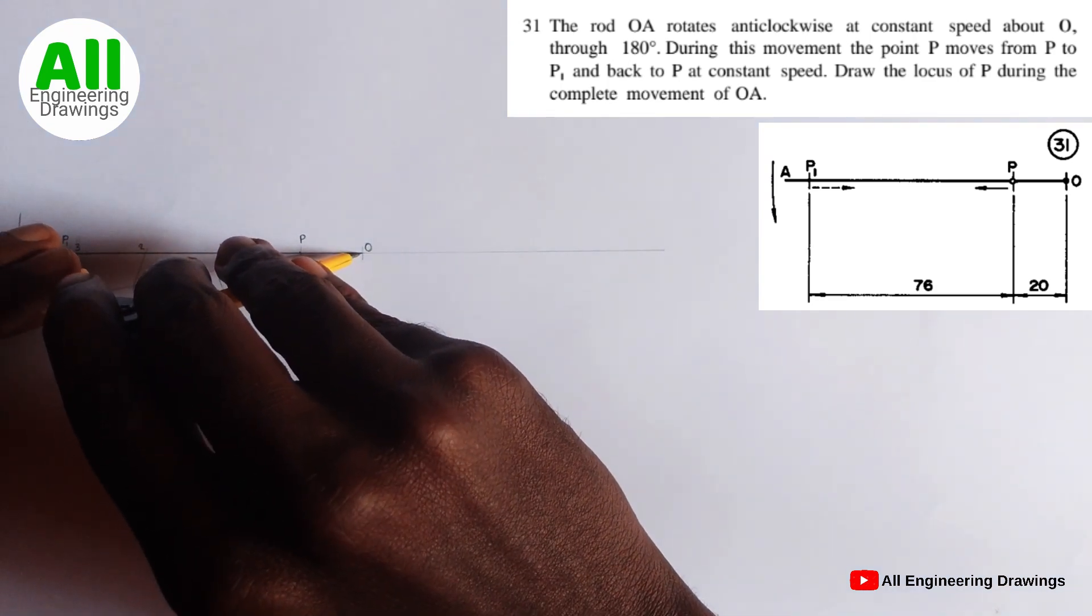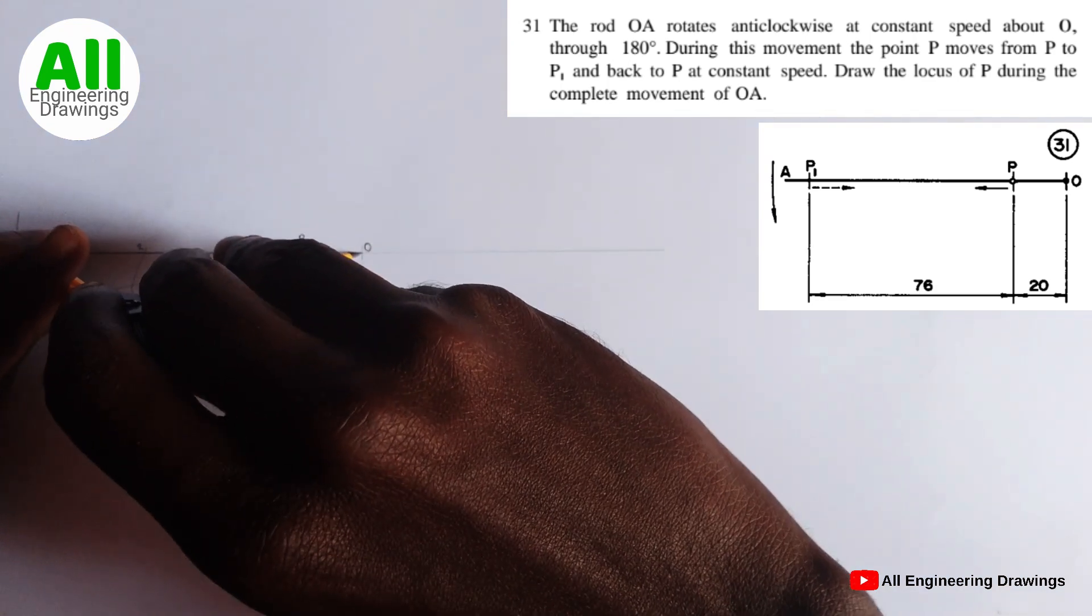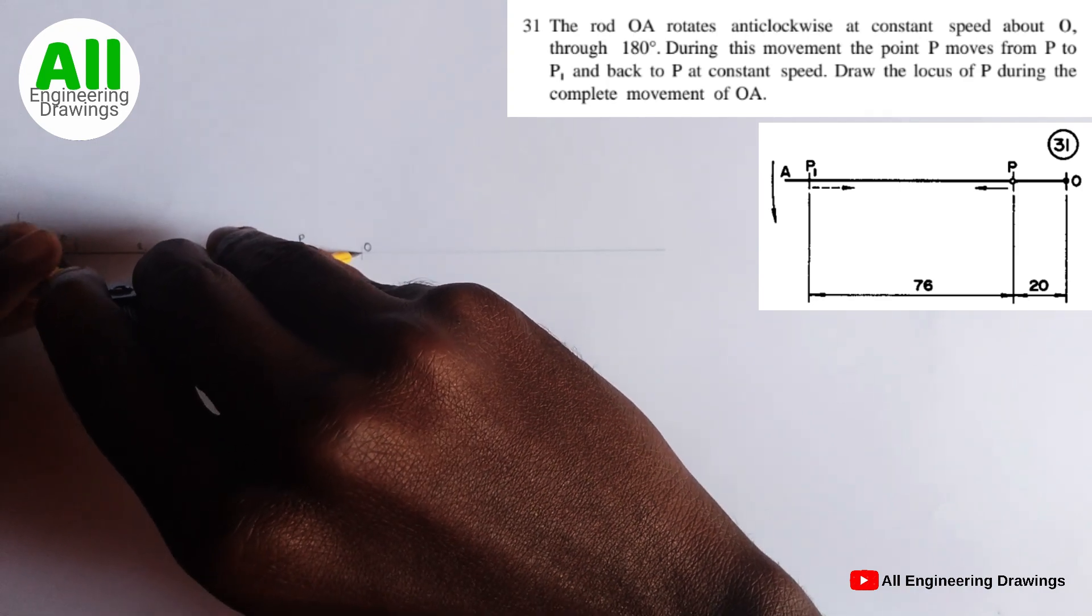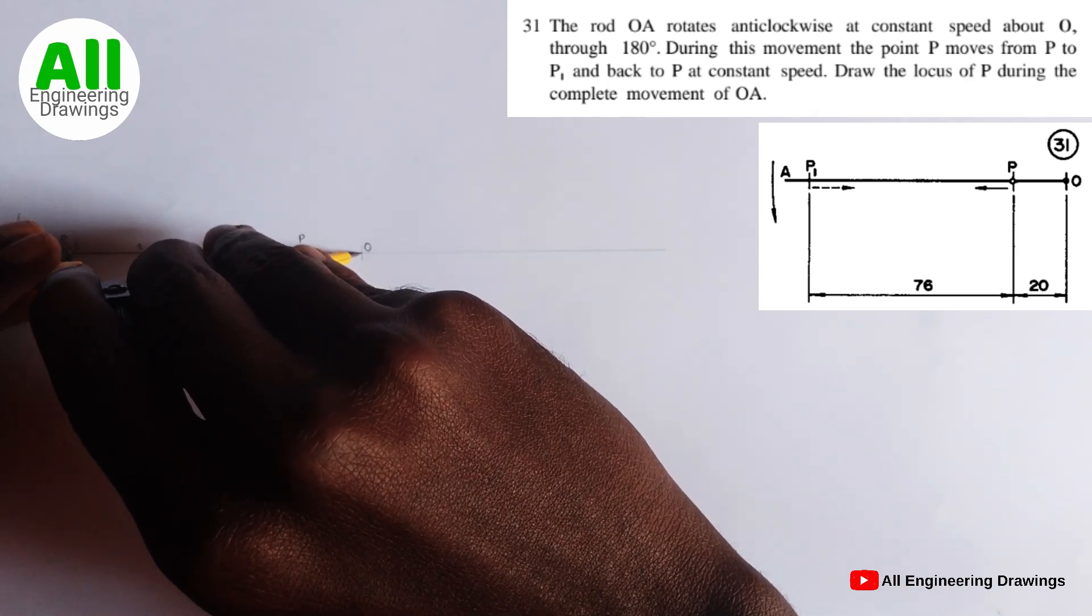That is the radius of your compass will be O, P1. Then draw a semicircle below.